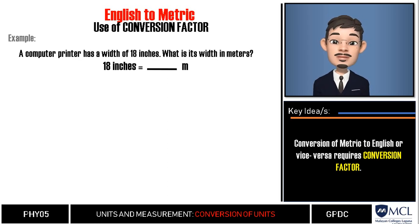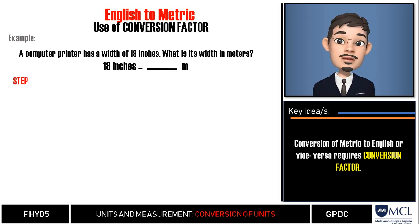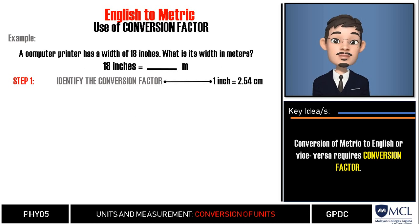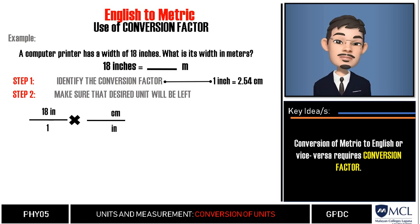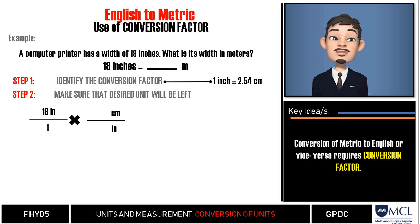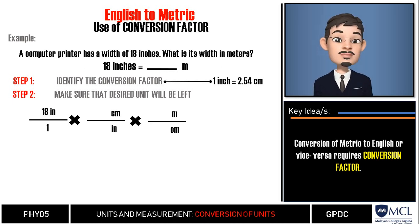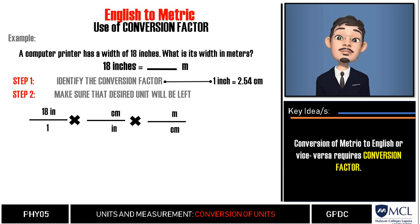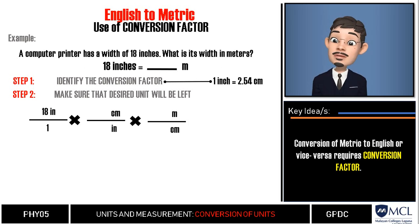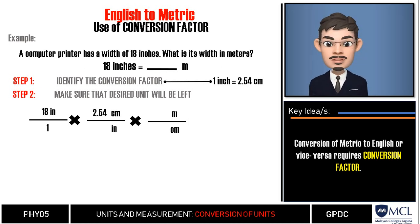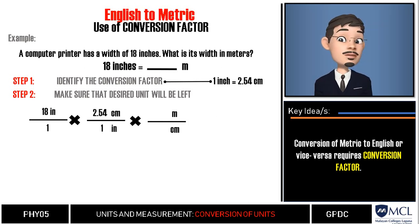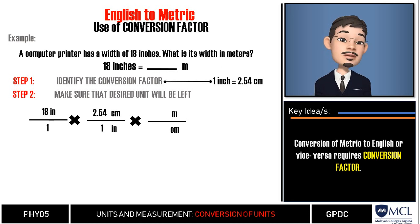Example two: a computer printer has a width of 18 inches — what is its width in meters? We choose the conversion factor: 1 inch equals 2.54 centimeters. We set up the ratio so that inches cancel, placing 18 inches in the numerator and multiplying by 2.54 centimeters over 1 inch, assigning values so that inches cancel and centimeters remain.